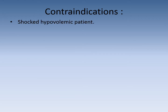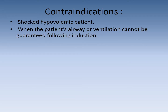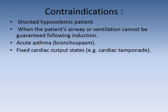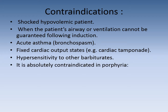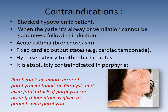Contraindications include shocked and hypovolemic patients, and when the patient's airway or ventilation cannot be guaranteed following induction. It is contraindicated in acute asthma because it causes bronchospasm, and in fixed cardiac output states such as cardiac tamponade. Also contraindicated in hypersensitivity to other barbiturates. It is absolutely contraindicated in porphyria — an inborn error of porphyrin metabolism — as paralysis and even fatal attacks of porphyria can occur if thiopental is given to such patients.